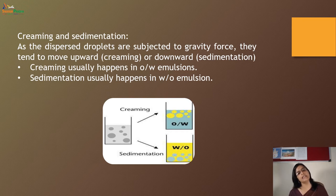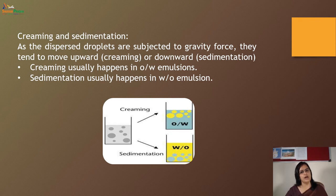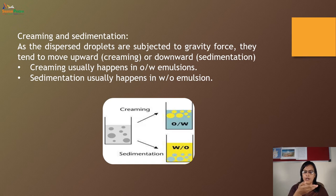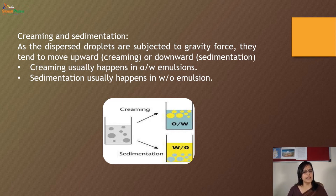Creaming and sedimentation: as the dispersed droplets are subjected to gravitational force, they tend to move upwards — this is called creaming. If they tend to move downwards, it is called sedimentation. Creaming is the movement of droplets upwards and sedimentation is the movement of droplets downwards. Creaming usually happens in oil-in-water emulsions, and sedimentation usually happens in water-in-oil type of emulsions.